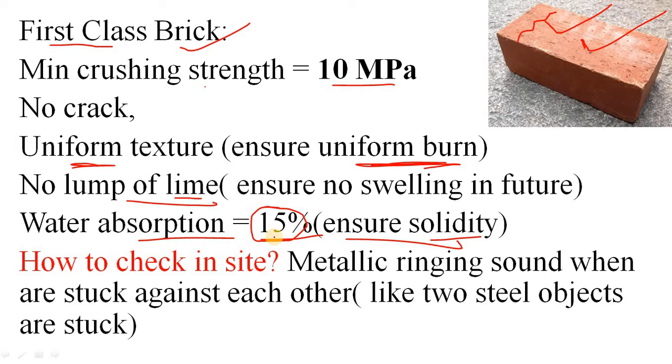Now, if you are a site engineer and you have to check whether a stack is first class brick or something else, how will you check it on site? Simply keep two bricks in your two hands and strike them against each other. You will get a metallic ringing sound, like two steel objects struck together. If you get this type of clear metallic ringing sound, then you should be quite sure that the brick stack is first class brick.